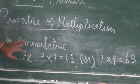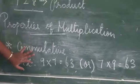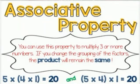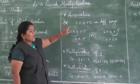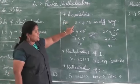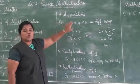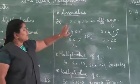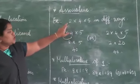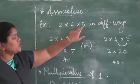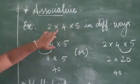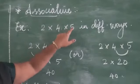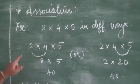Next is the associative property. The associative property means multiplying two or three numbers in different ways. Here we have an example: 2 × 4 × 5. We are going to multiply these three numbers in different ways.